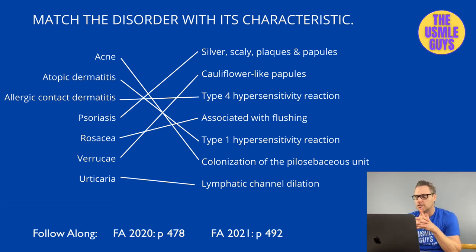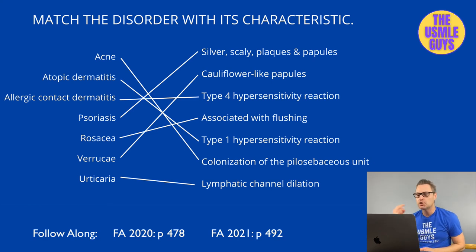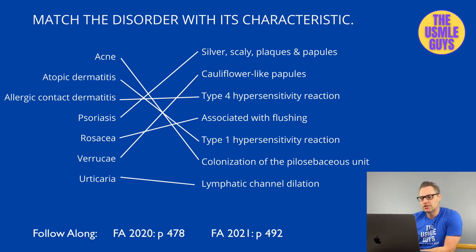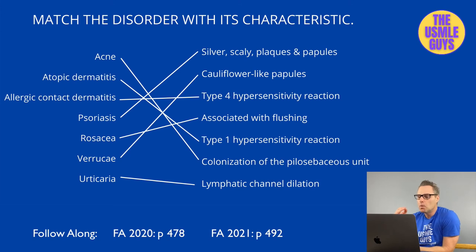Allergic contact dermatitis is a type 4 hypersensitivity reaction occurring secondary to allergen exposure — commonly nickel, copper, other metals, or poison ivy. Psoriasis presents with silver scaly-like plaques commonly on the knees and elbows. Microscopically, you'll see an increase in the stratum spinosum and a decrease in the stratum granulosum, as well as the Auspitz sign — pinpoint bleeding spots where dermal papillae are exposed when scales are scraped off. Watch for nail pitting and arthritis, which would change the diagnosis to psoriatic arthritis.